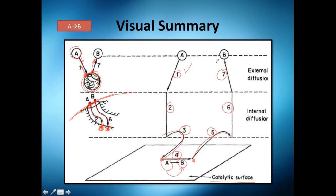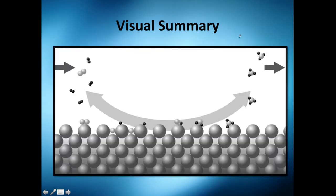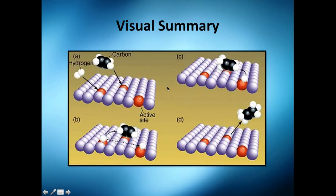It's very straightforward. We'll analyze this more later. For example, in a simpler case, you have reactants that adsorb, react, desorb, and diffuse outside — that has fewer steps. Some systems involve only steps two through six, or even fewer.